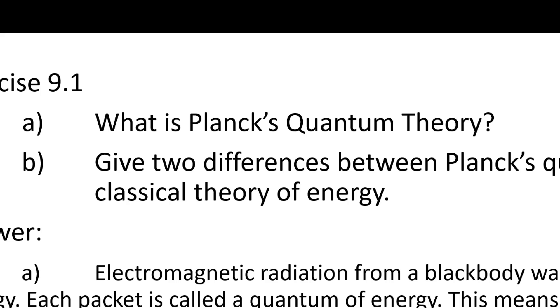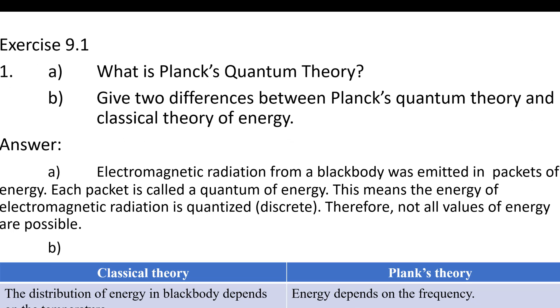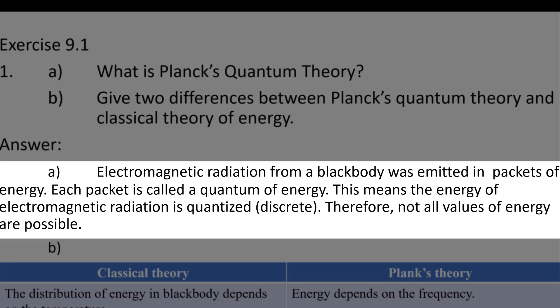Let's take a look at this question. What is Planck's quantum theory? So you can do the definition like this. Electromagnetic radiation from a black body was emitted in packets of energy, where each packet is called a quantum of energy. This means the value of electromagnetic radiation is quantized or discrete. Therefore, not all values of energy are possible.